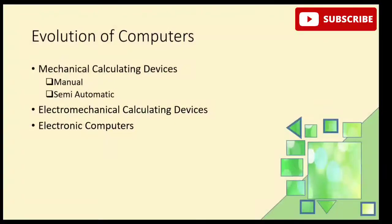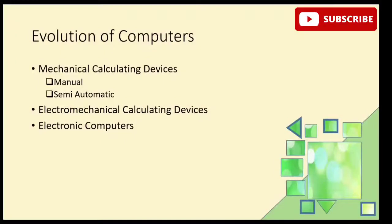Mechanical calculating devices use all mechanical parts, like nuts, balls, gears, springs, and wheels. These devices require little electricity to run. The calculation process in these devices is slow. Some are manual calculating devices and some are semi-automatic calculating devices.